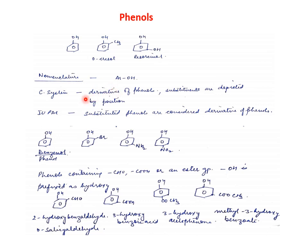Let's talk about the common system. In the common system, we call them derivatives of phenols, and the substituents depict their position. For example, if there is a methyl group, we call it 2-methylphenol. This one here is 3-hydroxyphenol. So in the common system, we call them derivatives of phenols and name the substituents.